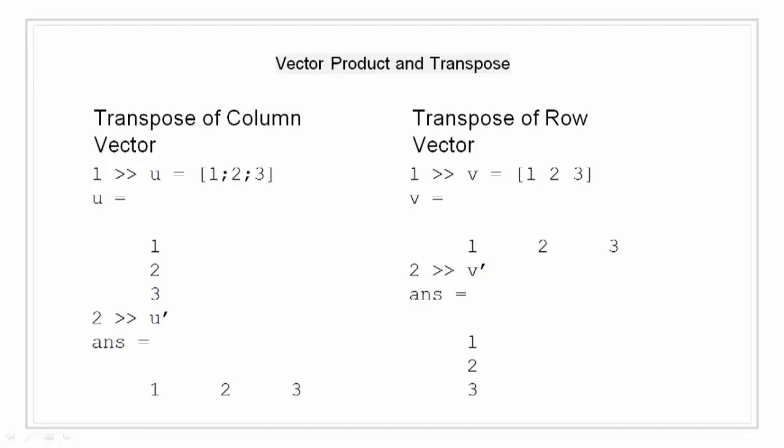Transpose is also performed on vectors. So, it should come as no surprise that transpose of a row vector is a column vector and transpose of a column vector is a row vector. So, on the left, I have transposed a column vector that becomes a row vector and on the right, I have transposed a row vector that becomes a column vector.